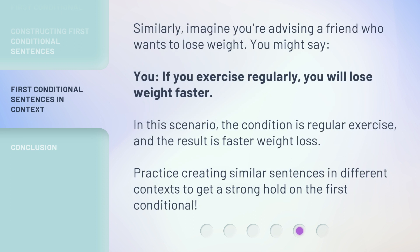Similarly, imagine you're advising a friend who wants to lose weight. You might say, 'If you exercise regularly, you will lose weight faster.' In this scenario, the condition is regular exercise, and the result is faster weight loss. Practice creating similar sentences in different contexts to get a strong hold on the First Conditional.